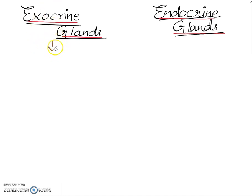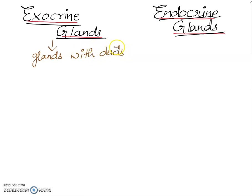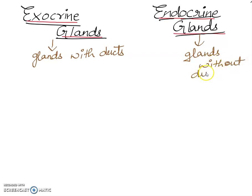The first point: exocrine glands — 'exo' means they are having ducts, so these are the glands with ducts. And if we talk about endocrine glands, these are the glands without ducts, or you can say they are ductless glands.